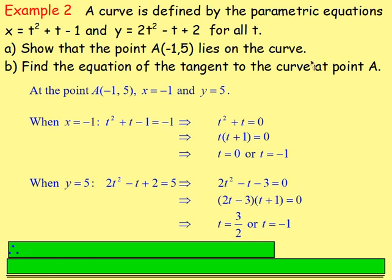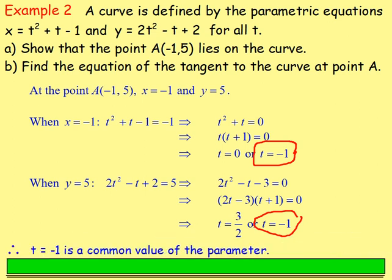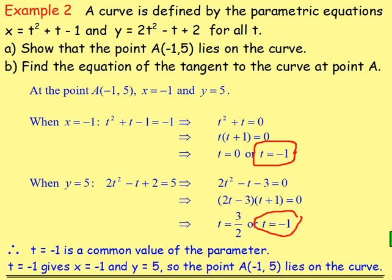Notice that t equals negative 1 appears in both solutions — it is a common value of the parameter. This means when t equals negative 1, x equals negative 1 and y equals 5, confirming that the point A, negative 1, 5, lies on the curve.